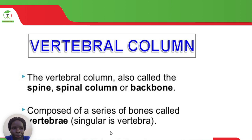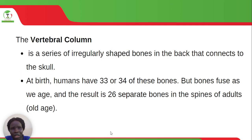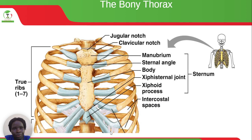It is composed of a series of bones called vertebrae — singular: vertebra, plural: vertebrae. The vertebral column is a series of irregular-shaped bones in the back that connects to the skull. At birth, humans have 33 or 34 vertebrae. As the human grows, some of these bones fuse, and at adulthood the person ends up with only 26 separate bones of the vertebral column.